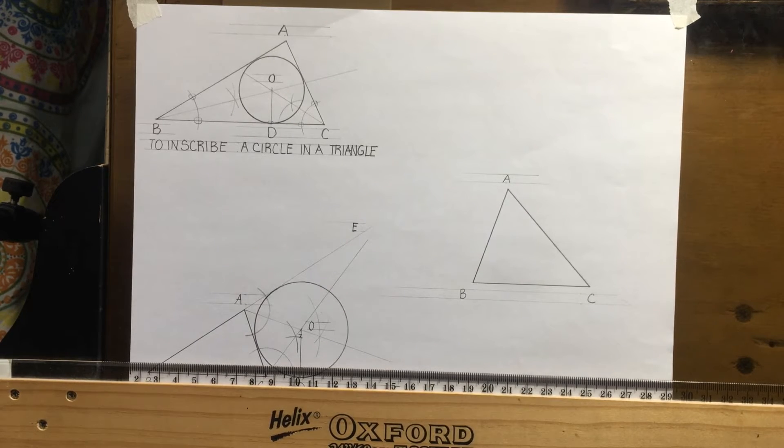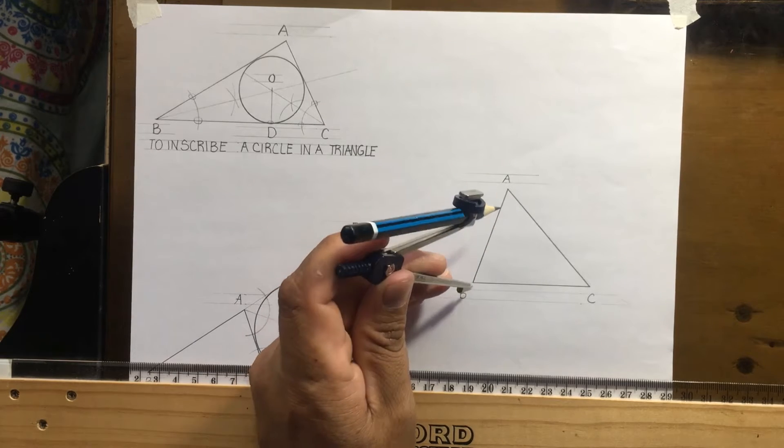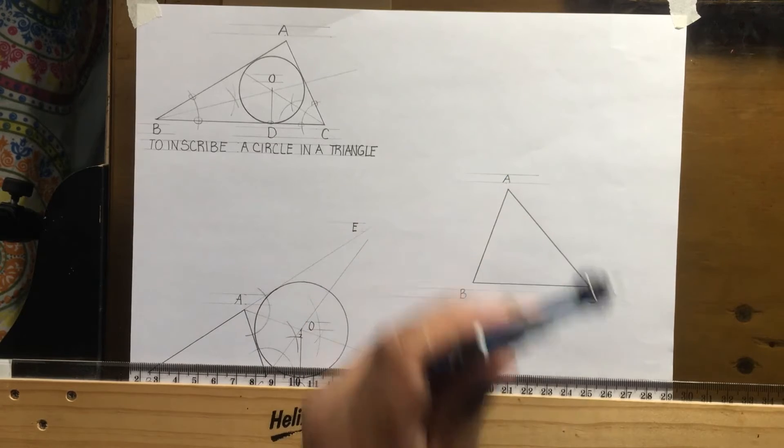What I do now, I want to bisect any two sides. I will decide this time I will use BC and then AC.